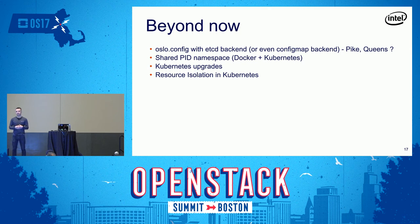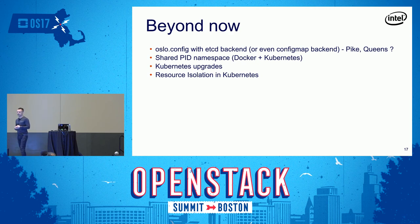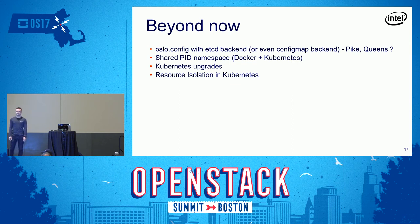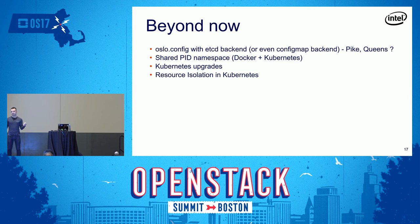Another upcoming technical improvement is shared PID namespace. Docker recently introduced the ability for multiple containers to share the same PID namespace, and we hope support for this will land shortly in Kubernetes. This is helpful when a malfunctioning service creates zombie processes — in a regular container there is no init process with PID 1 to handle zombies. SAP found a workaround by running a dummy init software in every container, but with shared PID namespace a cleaner solution is possible using a sidecar container as the init process.